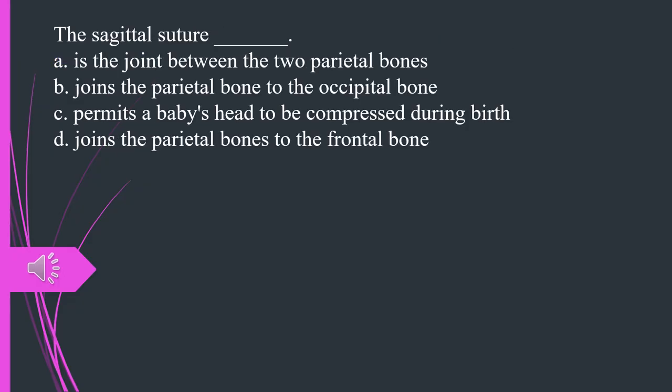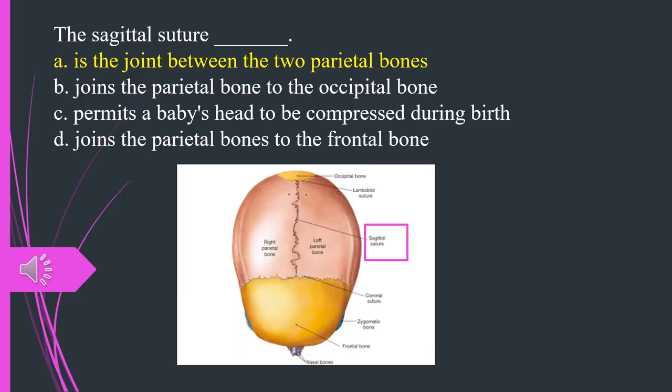The sagittal suture, A. is the joint between the two parietal bones. B. Joins the parietal bone to the occipital bone. C. Permits a baby's head to be compressed during birth. D. Joins the parietal bones to the frontal bone. The answer is A. Is the joint between the two parietal bones.